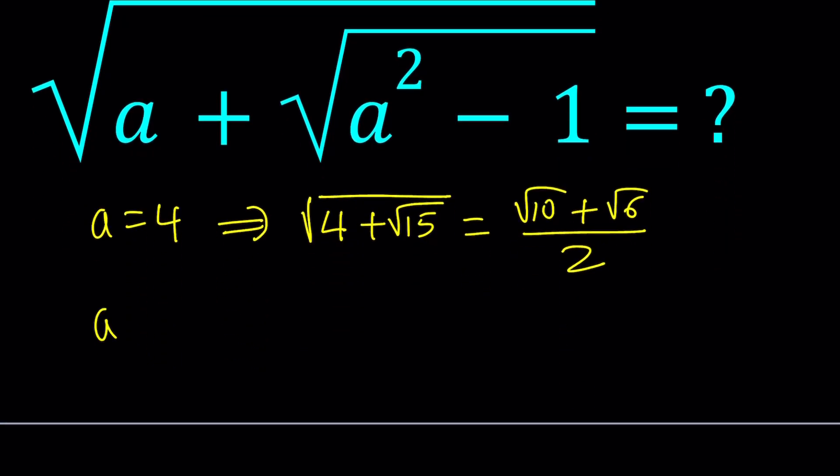Or if a is equal to 5, then you're going to get something like this: 5 plus the square root of 24, which can be written as 2 times the square root of 6. And as you should know, this can be written as root 3 plus root 2. So yes, it can be simplified or denested.